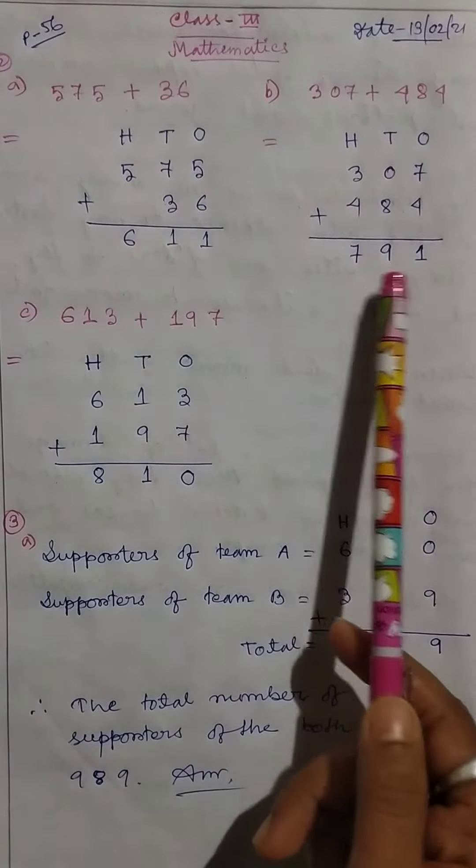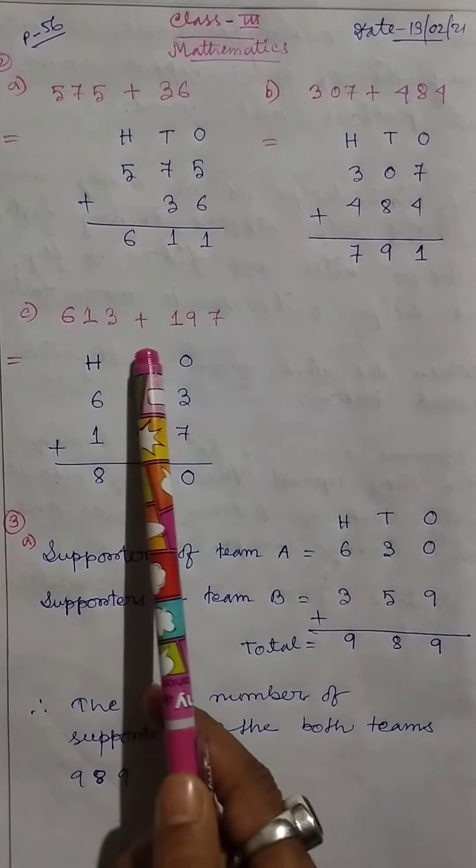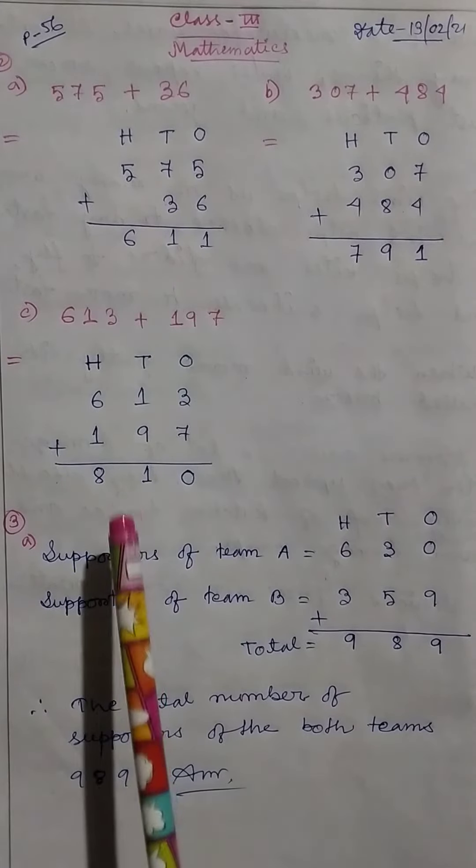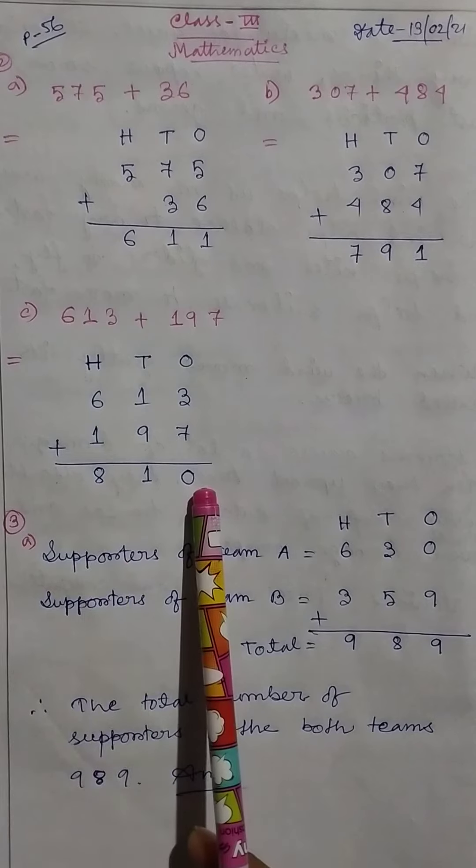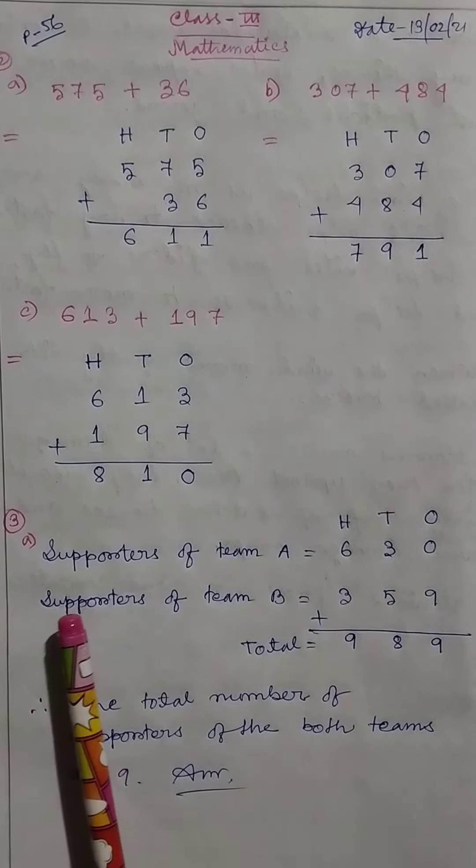Then 613 plus 197 equals 810. Now moving to number three.